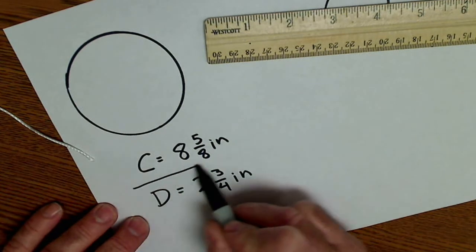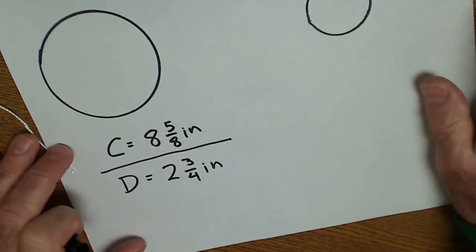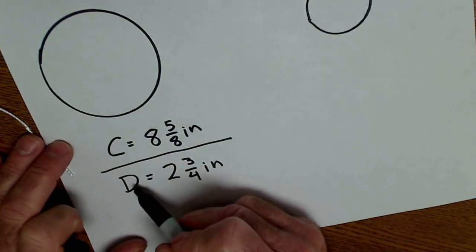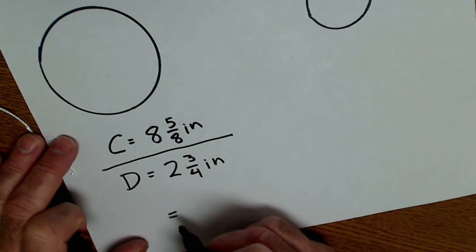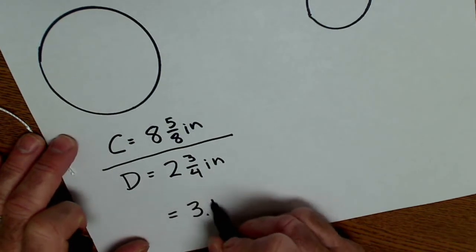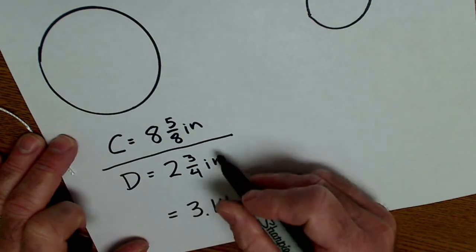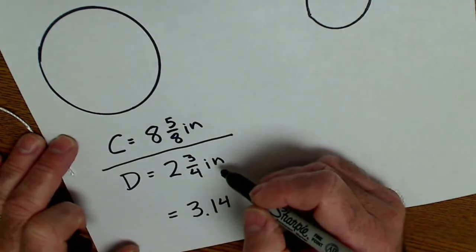If I divide one by the other, circumference divided by diameter, I'm going to get a ratio that is 3.14. It's a little off from that because of the inaccuracy of measurement.